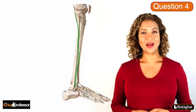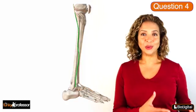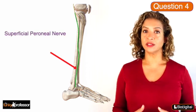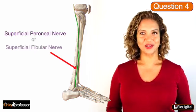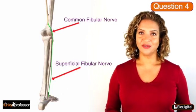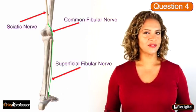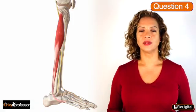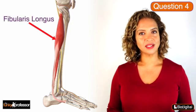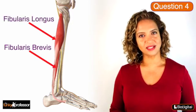Question 4. I'm a little bit old fashioned so I call this nerve the superficial peroneal nerve, but it's also known as the superficial fibular nerve. This nerve is a branch of the common fibular nerve, which is one of the two components of the sciatic nerve. The superficial fibular nerve travels down the lateral compartment of the leg and therefore it supplies the two muscles in that compartment: the fibularis longus and the fibularis brevis.